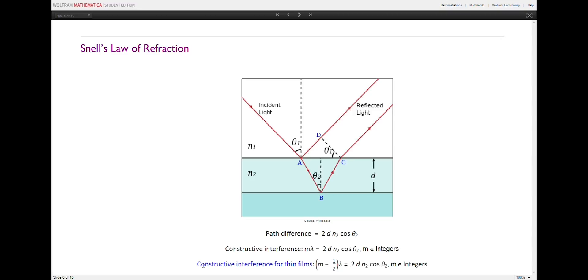For a typical thin film, which has a higher refractive index than its surroundings, which is usually air, this is the condition for constructive interference between waves reflected off the top and bottom surfaces of the film.